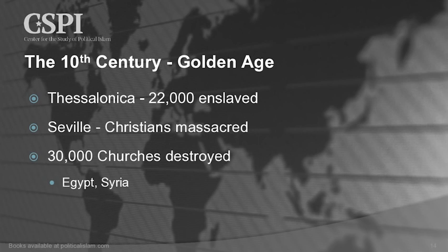We're still in the Golden Age — the 10th century. In Thessalonica, 22,000 Greeks are enslaved. In Seville, Spain, the Christians are massacred. And then 30,000 churches were destroyed by order of the Caliph in Egypt and Syria.